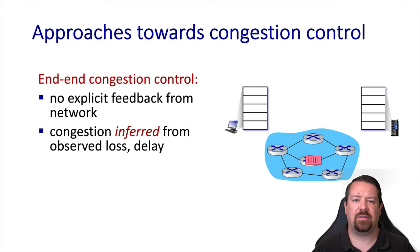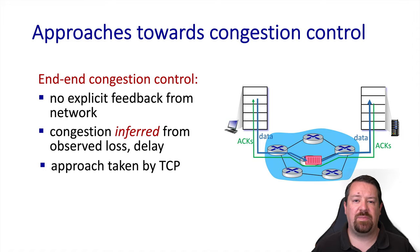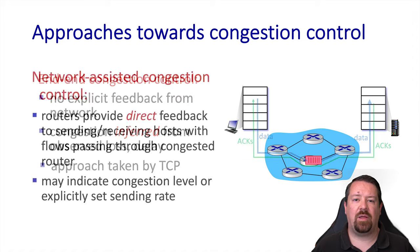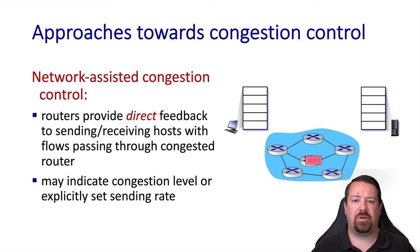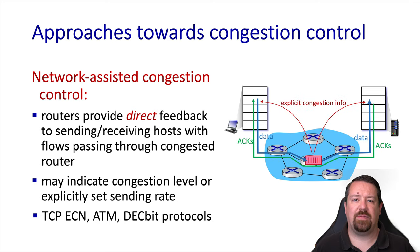Putting this in context of the network stack: the congestion we're discussing happens at layer three and lower devices, which do not explicitly communicate with the transport layer. But the transport layer does observe when packets are lost or delayed and can make inferences about the state of the network below it. This is how TCP is able to have a congestion control approach even though congestion does not happen at the transport layer. Another approach, implemented in non-IP networks, is that the network provides direct feedback about congestion and explicitly communicates with the sending and receiving hosts to address it.